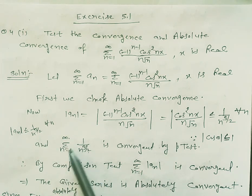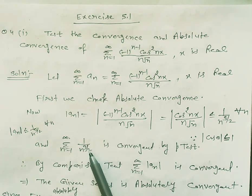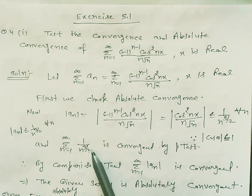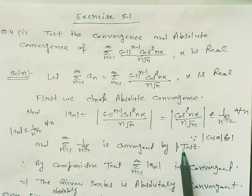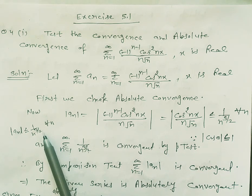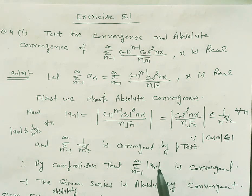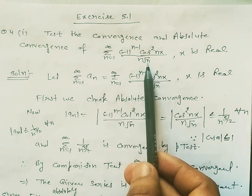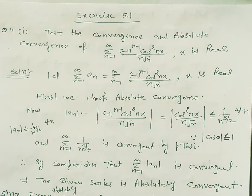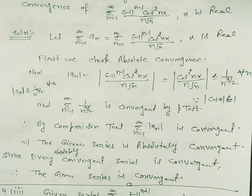Now we consider summation n=1 to infinity of 1/n^(3/2). Here p = 3/2 which is greater than 1, so it is convergent by the p-test. Therefore by the comparison test, summation of |a_n| is convergent. Since the series is convergent after applying modulus, it is absolutely convergent. And every absolutely convergent series is also convergent.